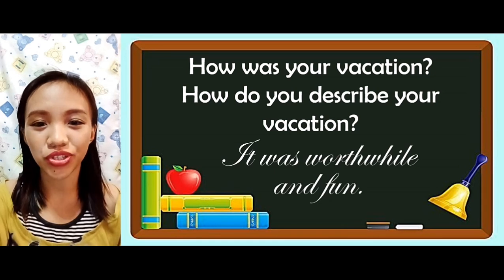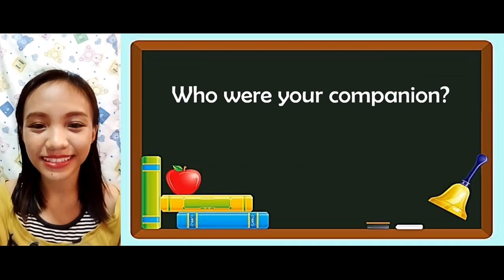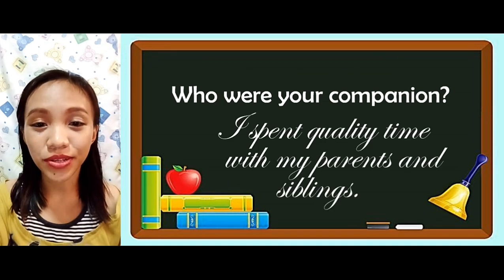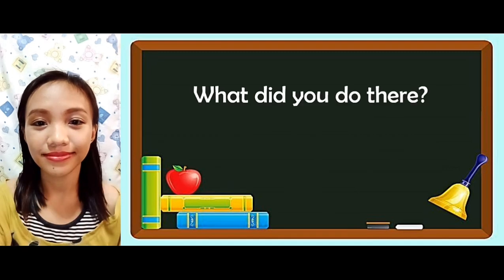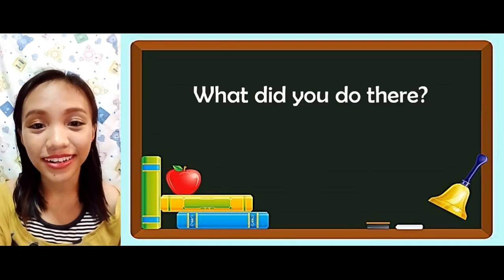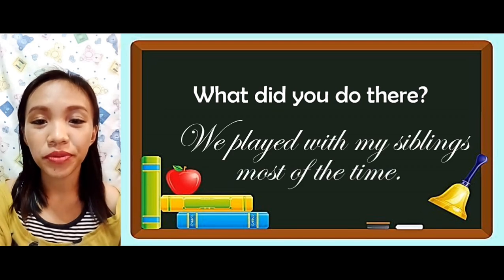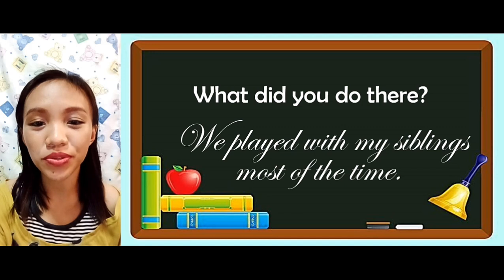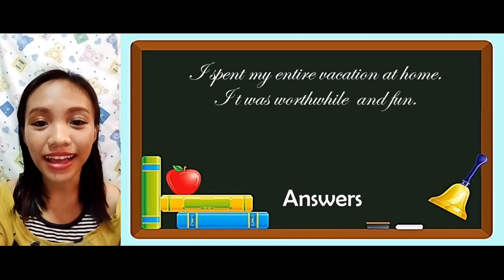Next question: Who were your companions? My answer would be, I spent quality time with my parents and siblings. What did you do there? Well, we played with my siblings most of the time. Now, let's make a list of our answers.